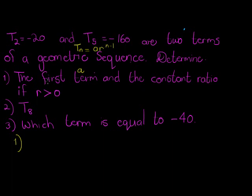The first one tells us find the first term and find the constant ratio, which is r. And they just give an extra condition: r must be positive, so we'll just make sure that we find a positive r.